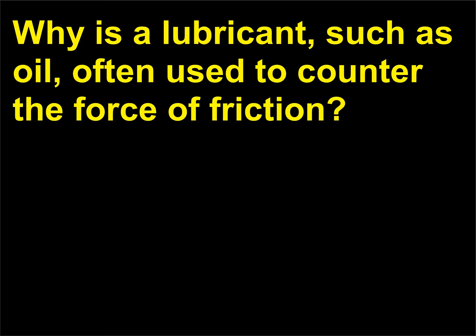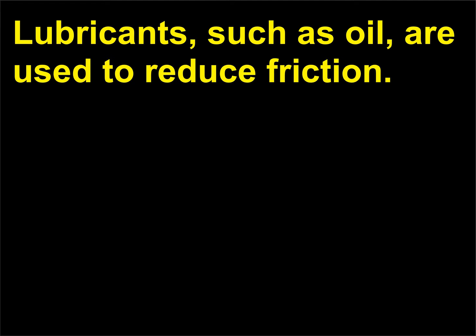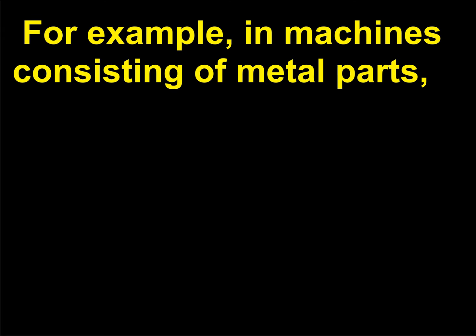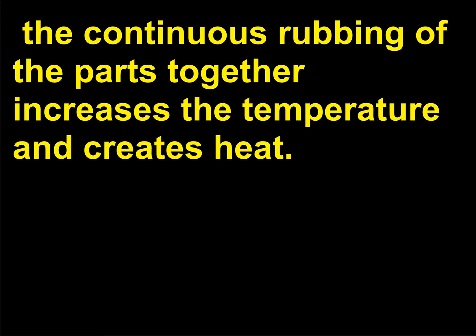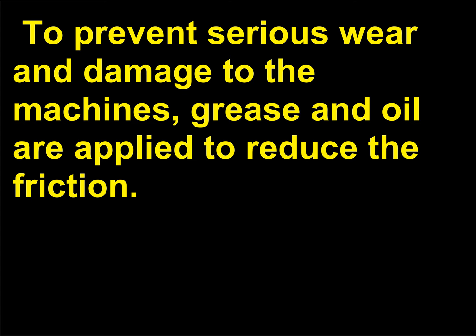Why is a lubricant, such as oil, often used to counter the force of friction? Lubricants such as oil are used to reduce friction. For example, in machines consisting of metal parts, the continuous rubbing of the parts together increases the temperature and creates heat. To prevent serious wear and damage to the machines, grease and oil are applied to reduce the friction.